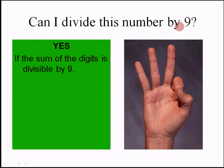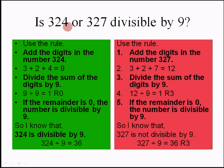Can I divide any number by 9? We can say yes if the sum of the digits is divisible by 9. Is 324 divisible by 9? Let's use the rule: add the digits in the number 324 — 3 plus 2 plus 4 is 9. Can we divide 9 by 9? Yes. The remainder is 0, so the number is divisible by 9. I know that 324 is divisible by 9 without leaving a remainder.